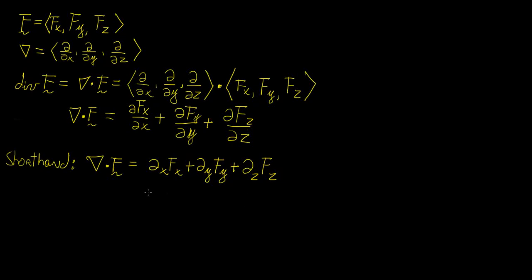In the last video we talked about how the NABLA operator or the DEL operator could be used to find the gradient of a scalar function, and we actually found that the gradient of some scalar function is actually a vector field. We plotted that on Octave and we saw how that could tell us things like the direction in which the maximum slope is happening at each point, and also the size of that gradient.